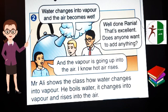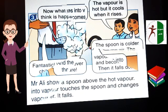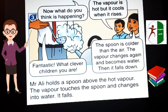The third one. Mr. Ali holds a spoon above the hot vapor. The vapor touches the spoon and changes into water. It falls. المعلم علي جاب معلقة حطها فوق البخار. البخار لمس المعلقة وتغير إلى ماء ثم سقط. Now, what do you think is happening? The vapor is hot but it cools when it rises. The spoon is colder than the air. The vapor changes again and becomes water. Then it falls down. Fantastic. What clever children you are.